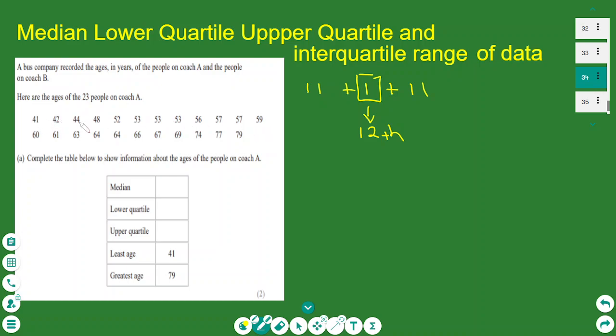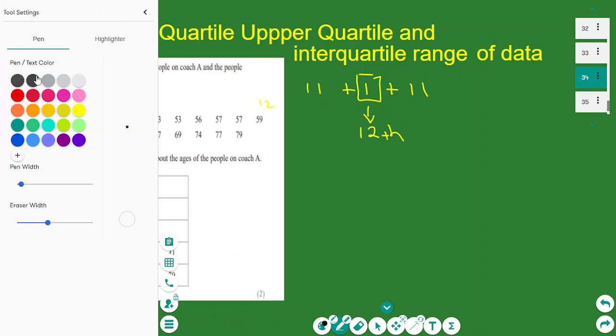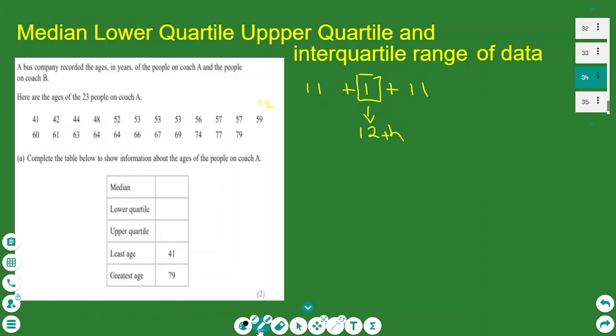So this is the 12th age. Counting these ages, 1, 2, 3, 4, 5, 6, 7, 8, 9, 10, 11, 12. So the 12th is 59. So I write here 59 as the median.